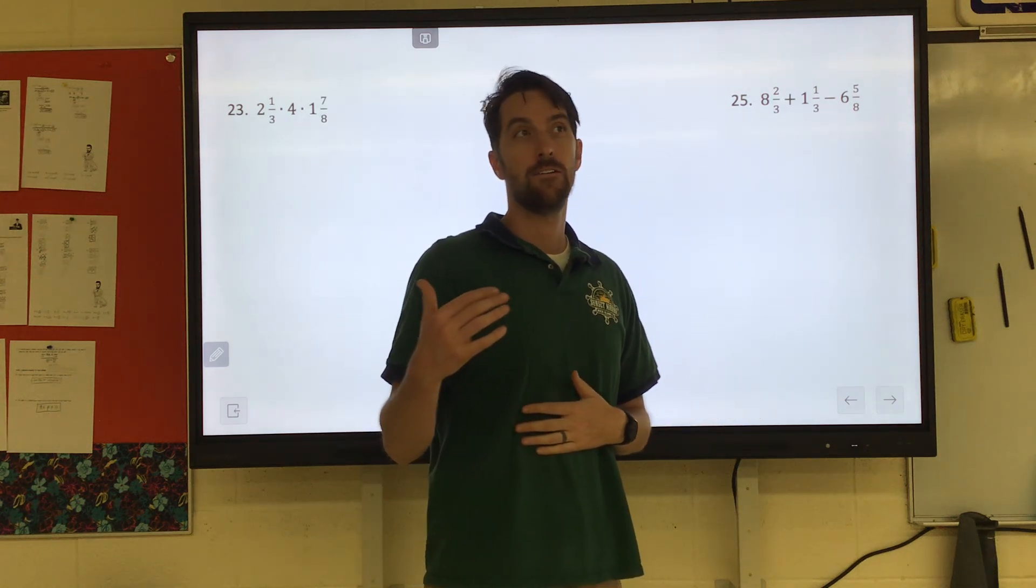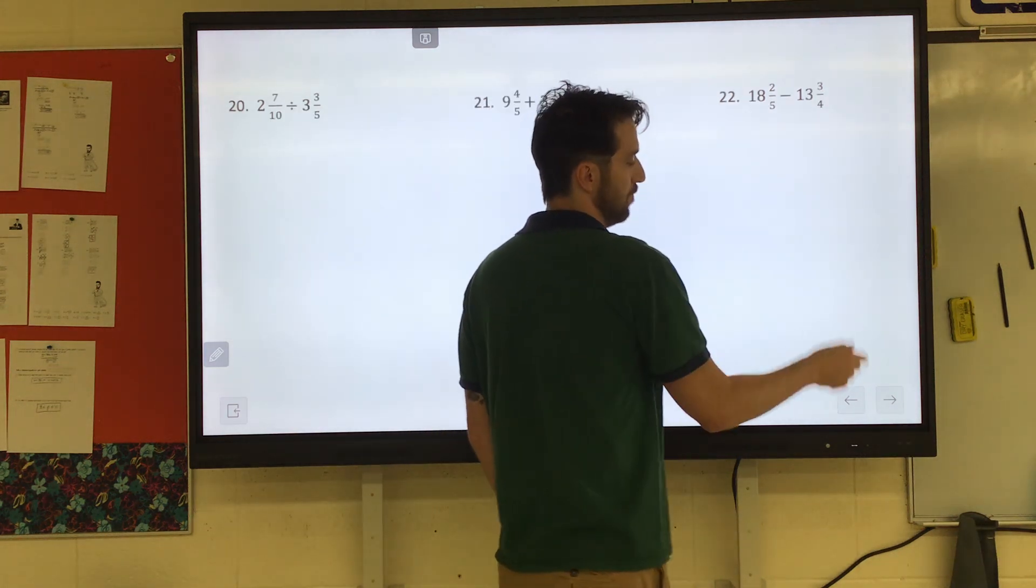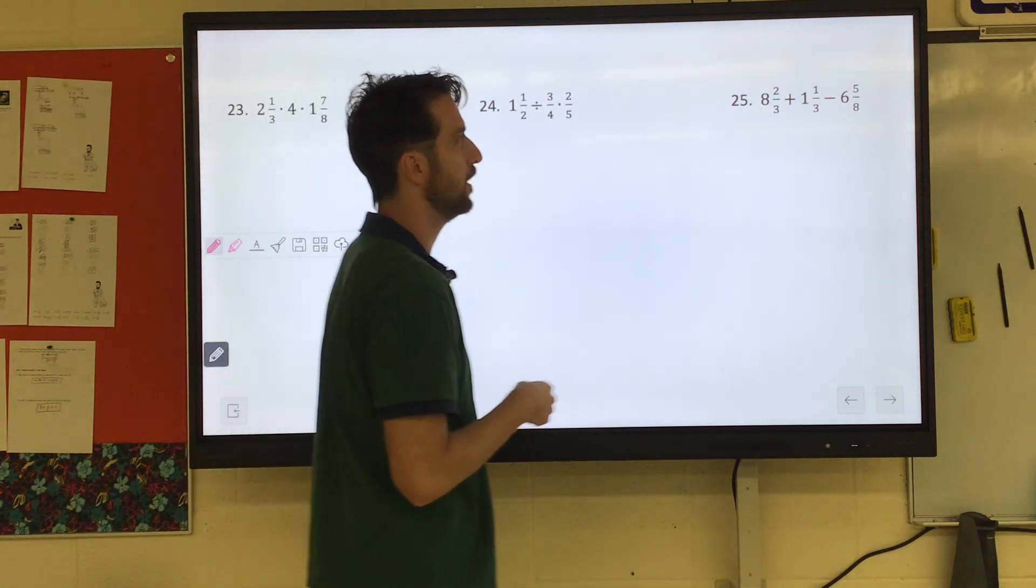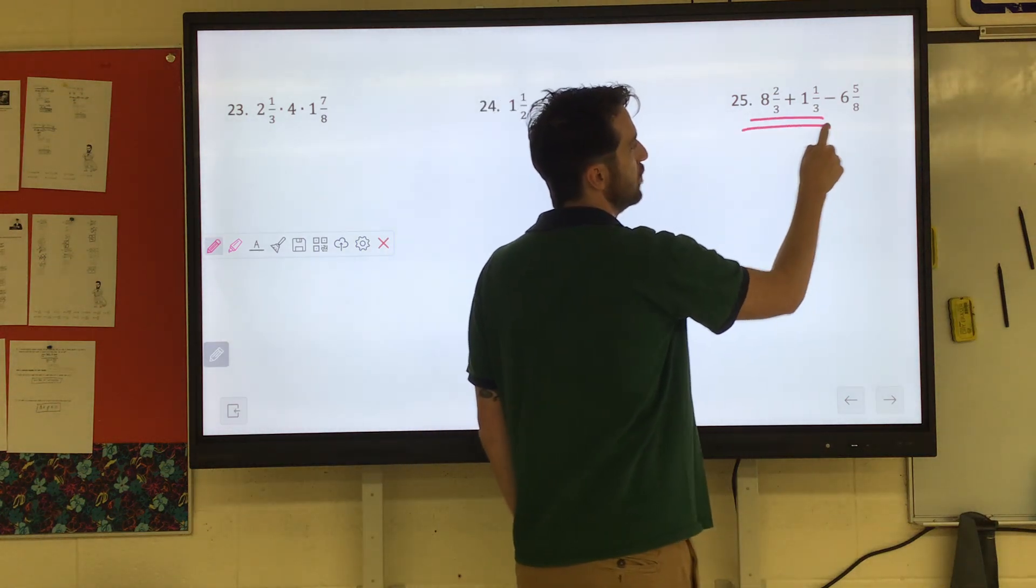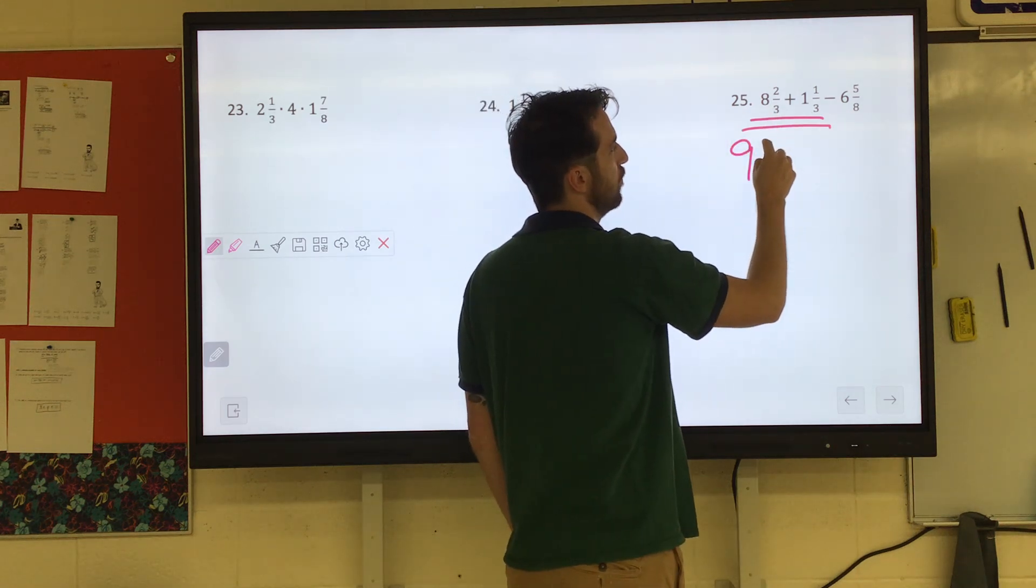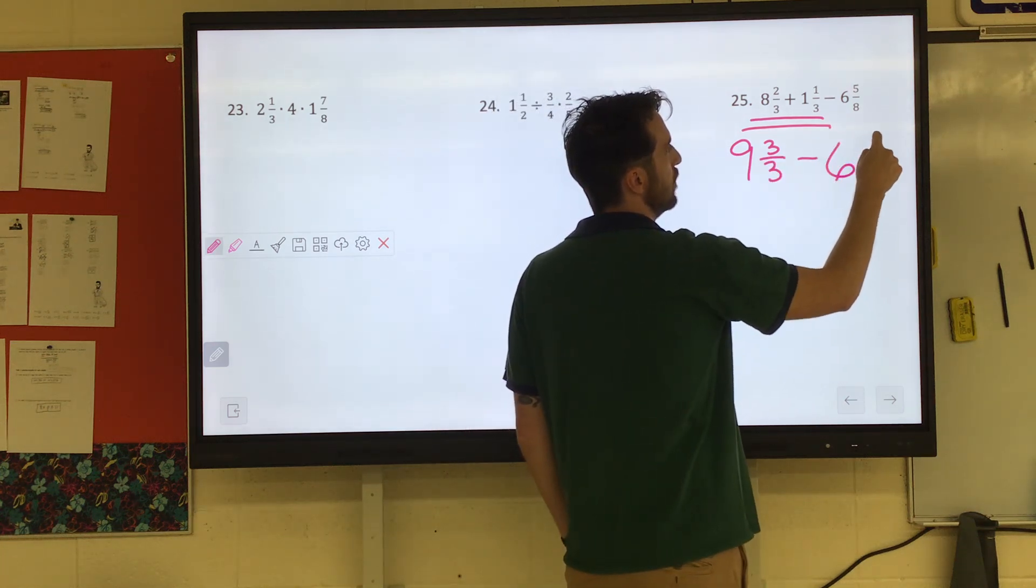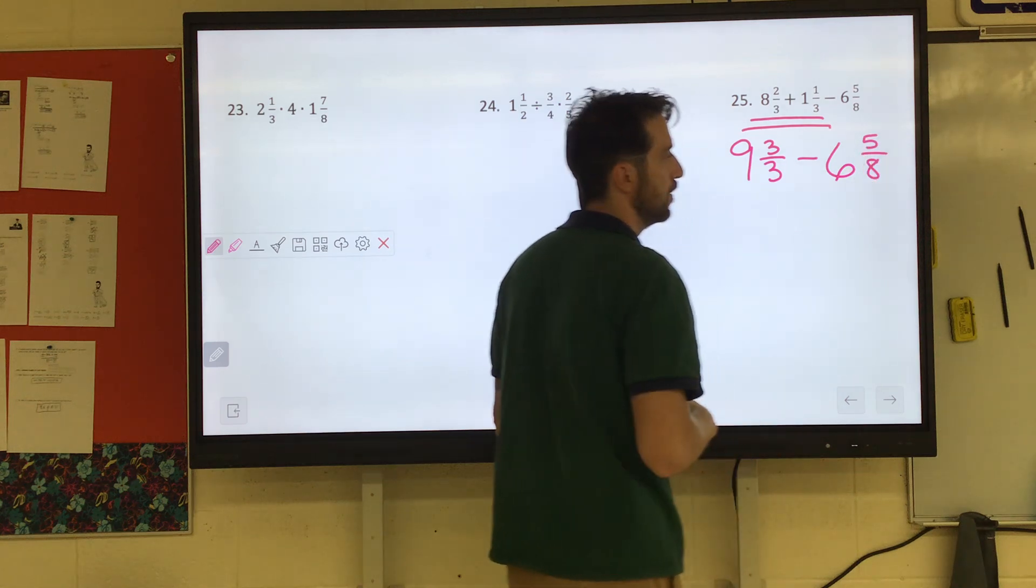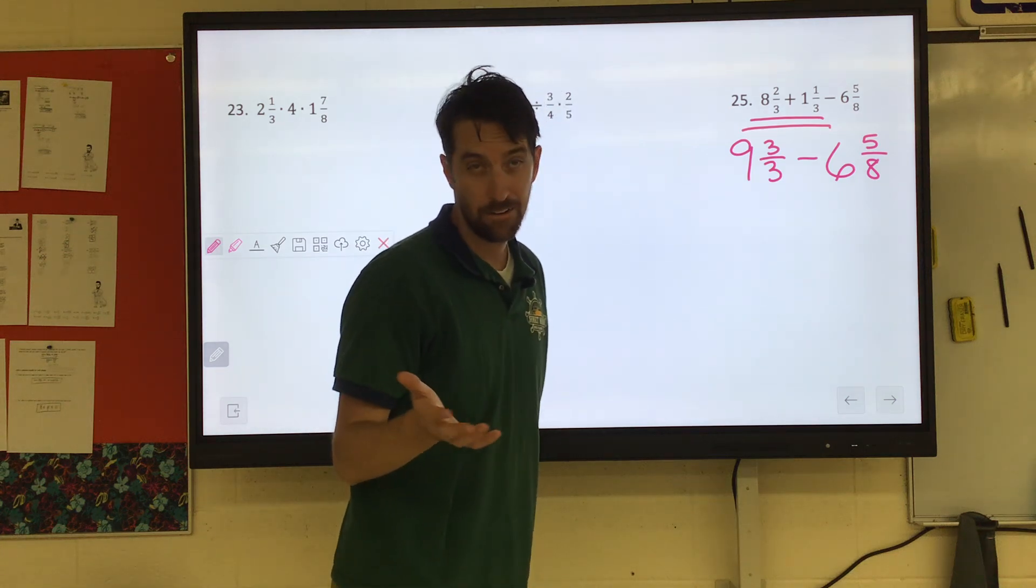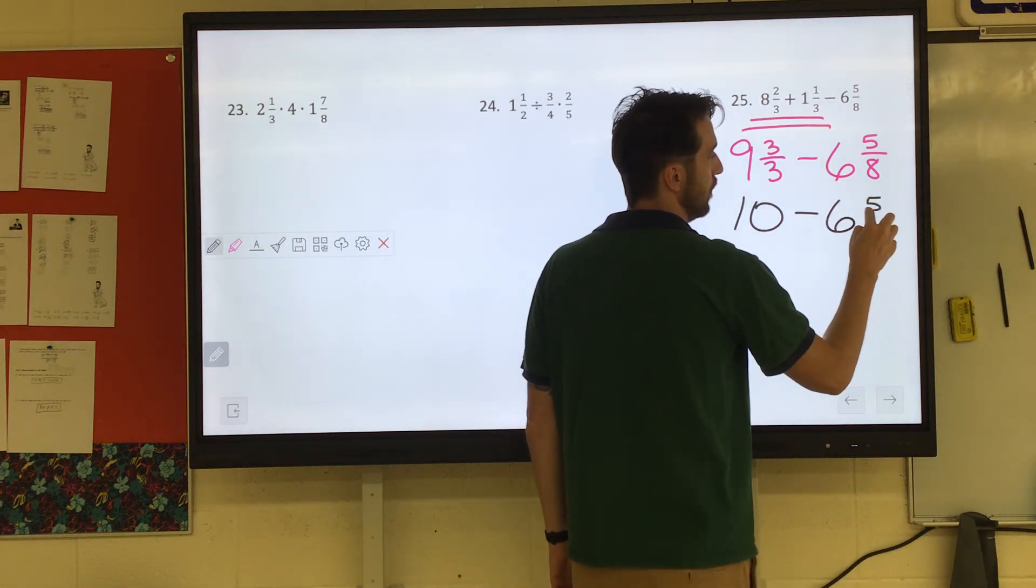However, if we add from left to right, you might notice these first two fractions have the exact same denominator. They're both thirds. So maybe let's just kind of see where we're at with that. If I did eight and two thirds plus one and one third, well, eight plus one is nine. Two thirds plus one third would be three thirds.